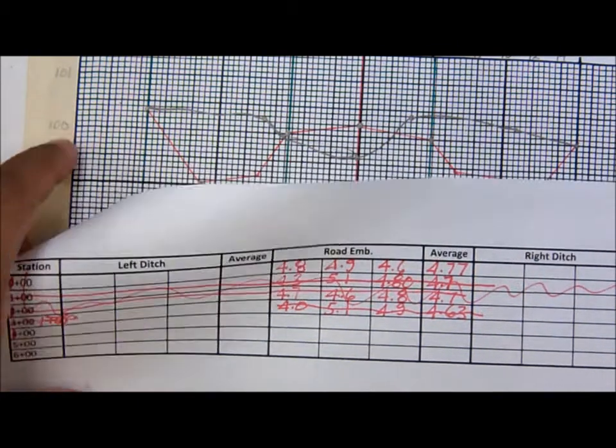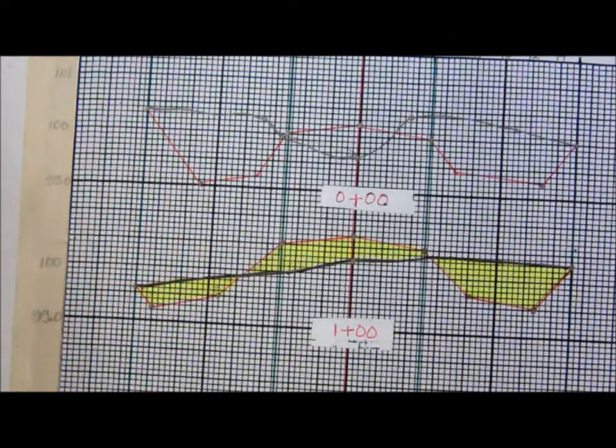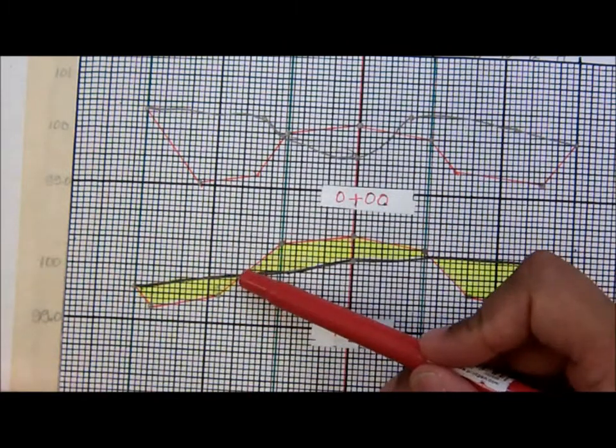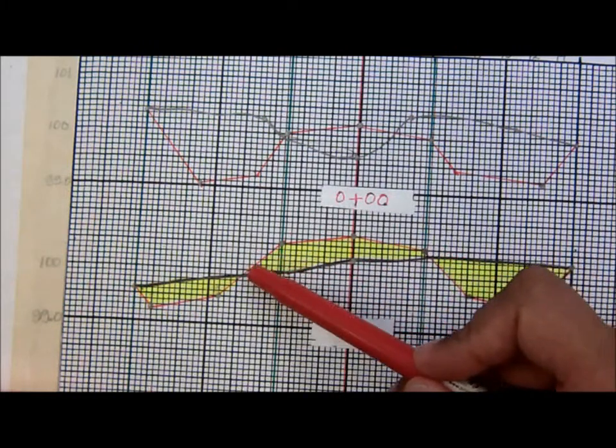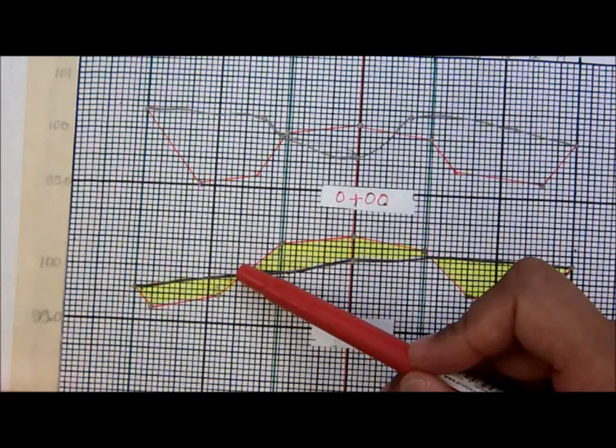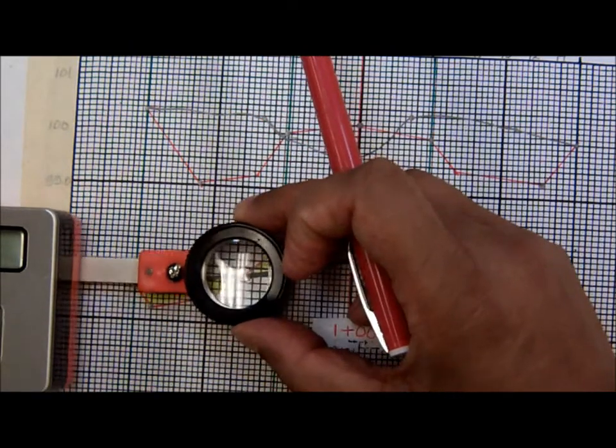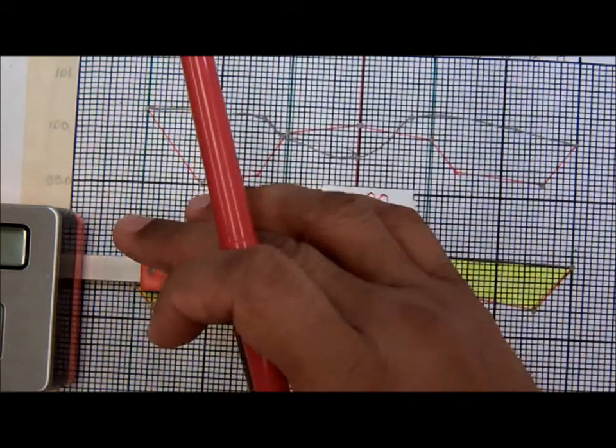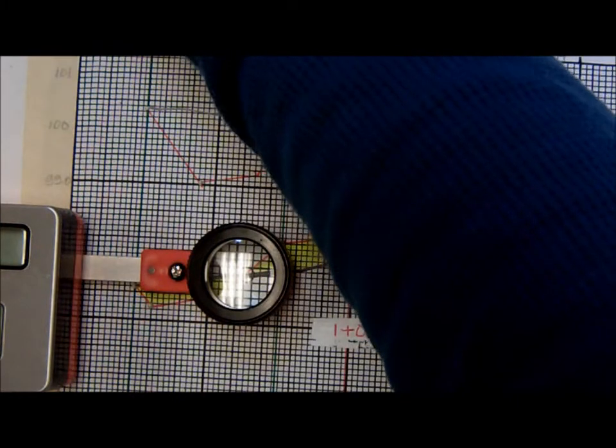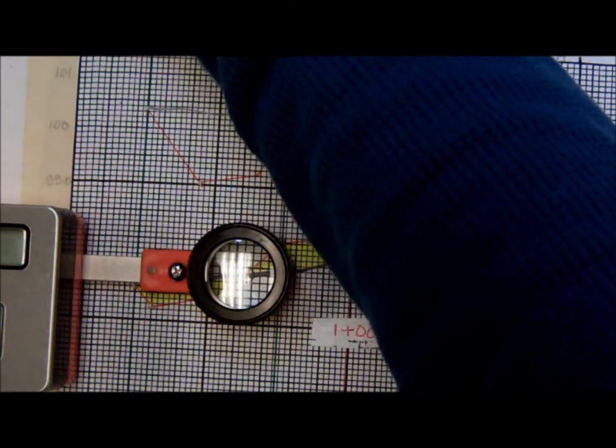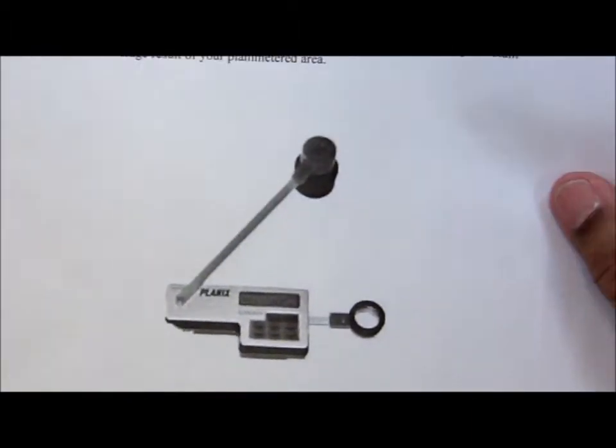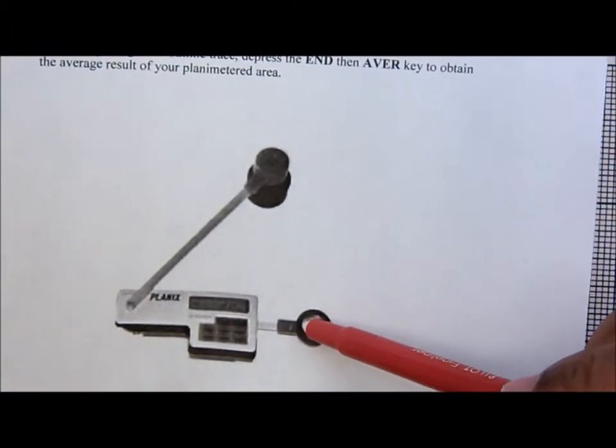I'm going to place my instrument at my start end point. So for the embankment I'm going to pick a point and that intersection seems to be a good point right there. I'll place my lens right over that point with that dot right on the start end point. I'm going to now attach my control arm and my weight.